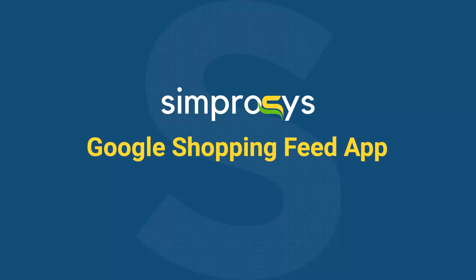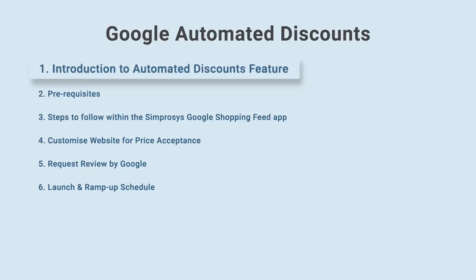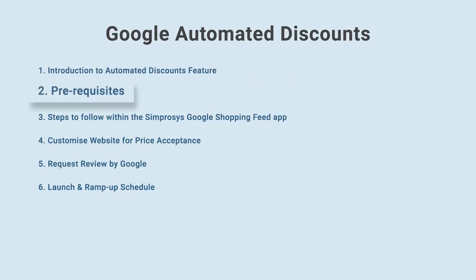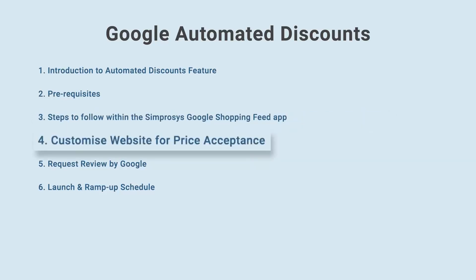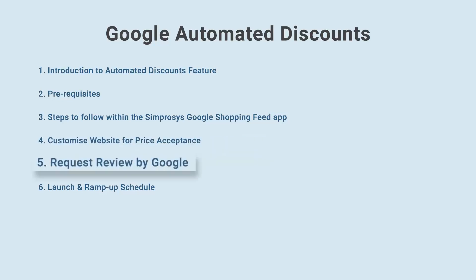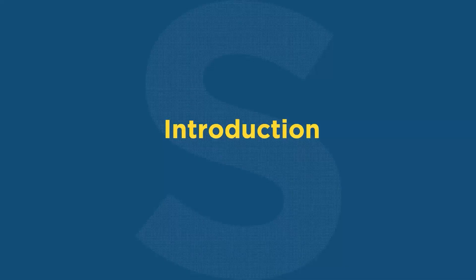Hello friends, welcome to the help videos of the Symprosys Google Shopping Feed app. In this video, we are going to see: 1. Introduction to Automated Discounts Feature, 2. Prerequisites, 3. Steps to follow within the Symprosys Google Shopping Feed app, 4. Customize Website for Price Acceptance, 5. Request Review by Google, 6. Launch and Ramp Up Schedule.